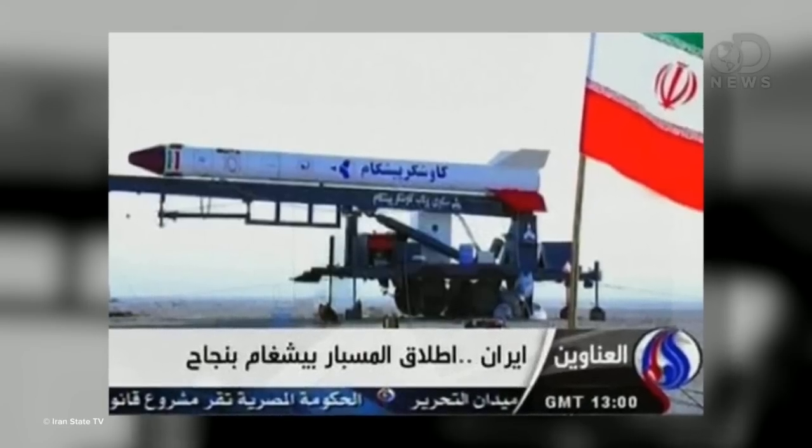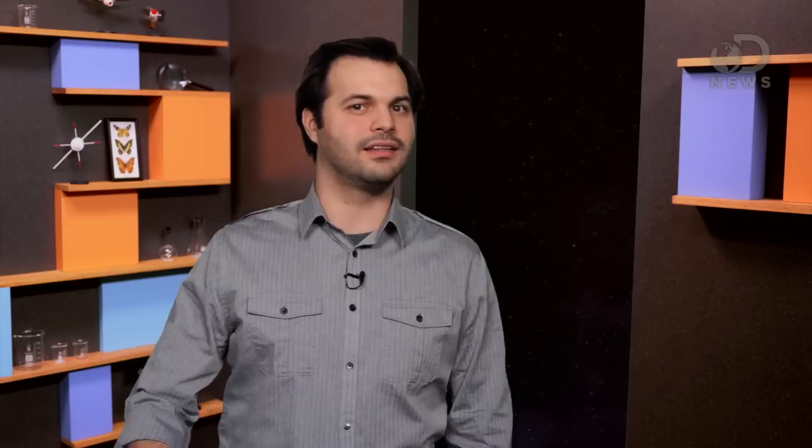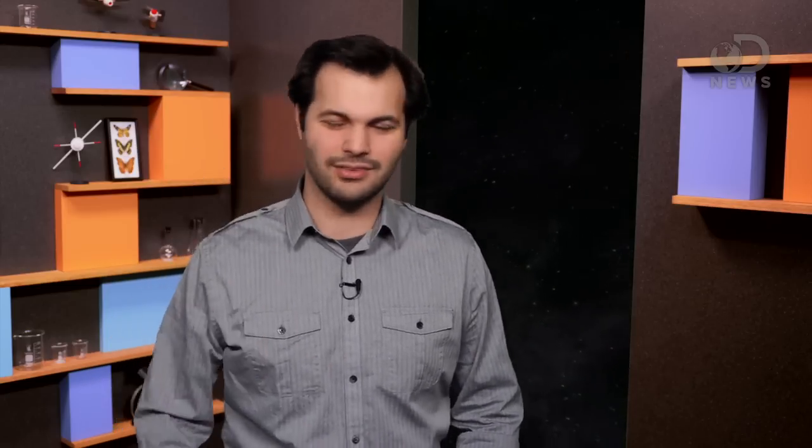So Iran launched this rhesus monkey, but they're kind of far behind on the list of animals that have been to space. You would think governments would share space technology, but it's actually a pretty closely guarded secret still. So Iran is about 50 years behind us, but they do have one thing ahead of us. Their rhesus monkey, unlike Albert II, made it up and then back down just fine.